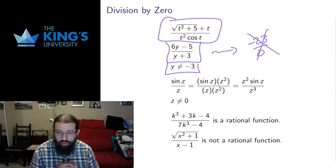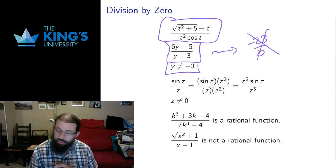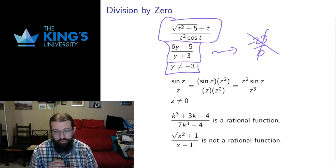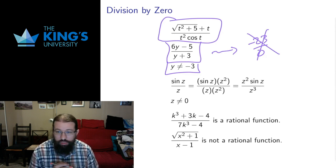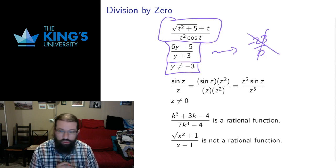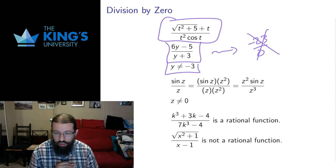Dividing by zero is not something we can do — it's not an operation that has any mathematical meaning. So when dealing with fractions with variables, always at the back of your mind you have to be thinking: let's make sure we avoid values of the variables that lead to zero in the denominator. That can be complicated because there can be all sorts of functions and expressions in the denominator that you have to be aware of.